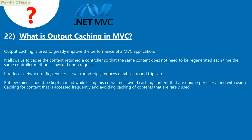Question 22: What is output caching in MVC? Output caching is used to greatly improve the performance of an MVC application. It allows caching the content returned by controllers so that the same content does not need to be regenerated each time the same controller method is invoked. It reduces network traffic, server round trips, and database round trips. Avoid caching content that is unique per user; use caching for frequently accessed content, and avoid caching rarely used content.